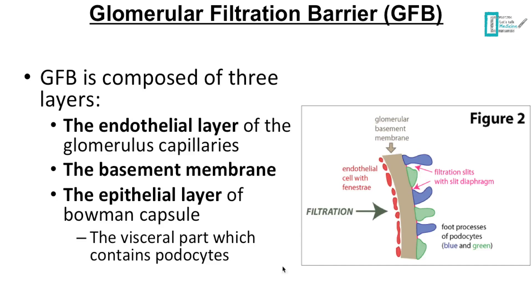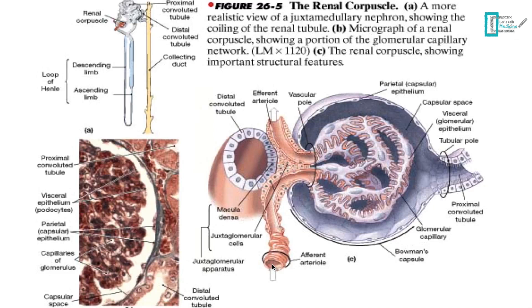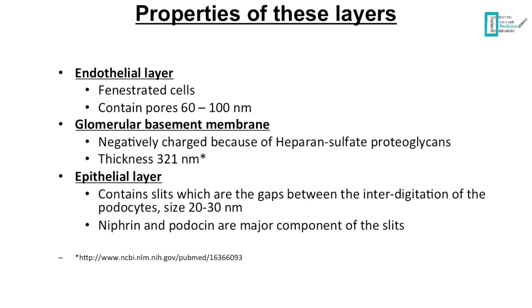Now let's talk about the properties of each of these layers. The main property of the endothelial layer is that the cells are fenestrated, which means they contain pores 60 to 100 nanometers in size.